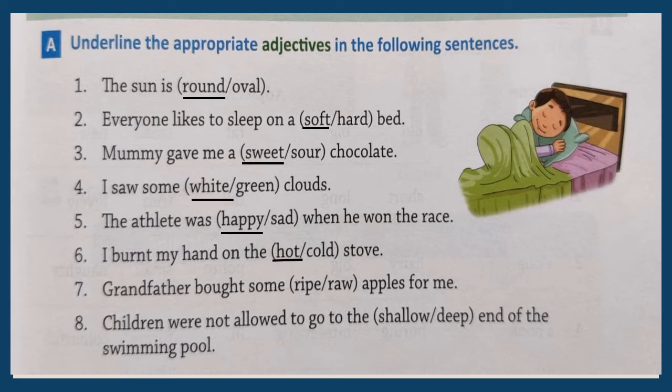Number seven: Grandfather bought some ripe or raw apples for me. What kind of fruits do you like to eat — ripe or raw? You like ripe, because ripe fruits are more sweet and soft. So let's underline ripe. Number eight: Children were not allowed to go to the shallow or deep end of the swimming pool. Small children are not allowed to go to which part? The deep part. So let's underline deep.